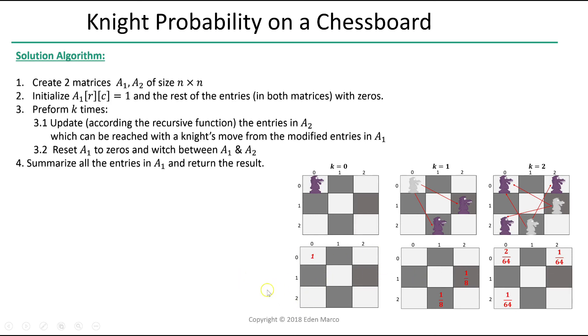In our example from before, this is now the new A sub 1 and A sub 2 is initialized to 0s. And in the final step of our algorithm, we simply summarize all the entries in A sub 1 and return the result.